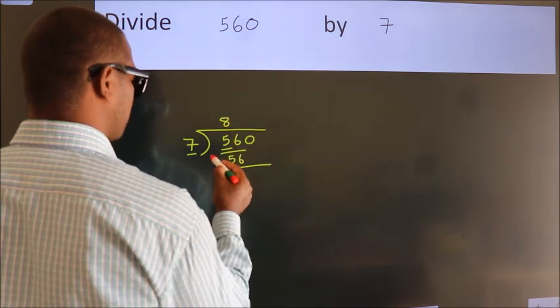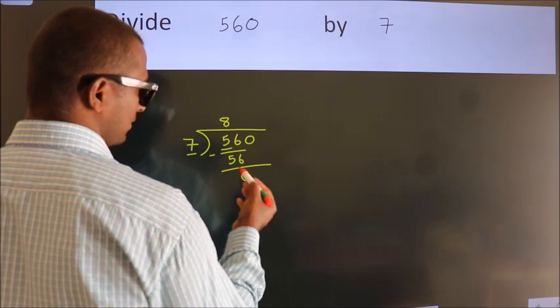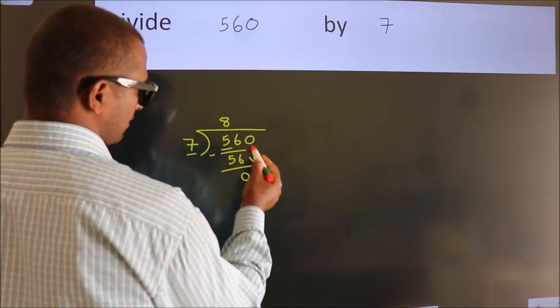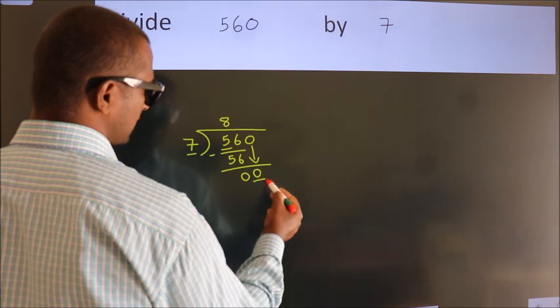Now we subtract. We get 0. After this, bring down the next number. Bring down 0. So, 0.